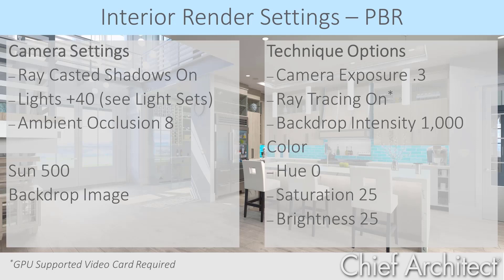The color settings: hue at 0, saturation at 25, and brightness also at 25. You can use these settings — if they work for your scene, you can set them as a default, save in your template plan, and have them going forward. I will caution you that some scenes will require different settings.